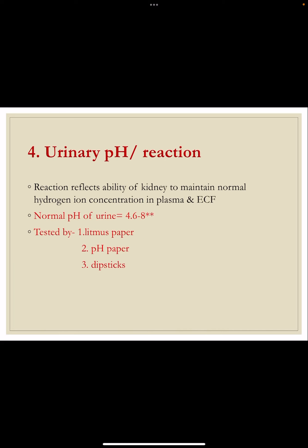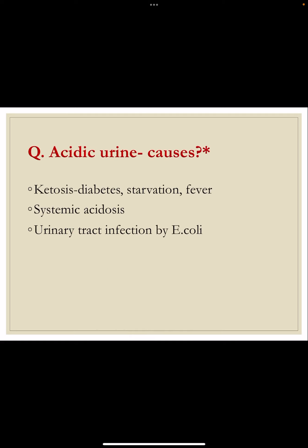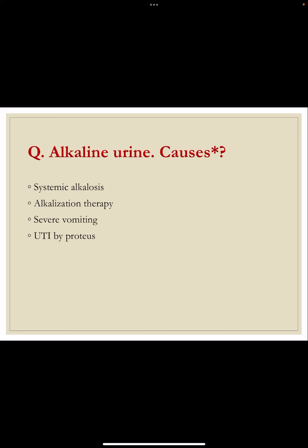Regarding urinary pH: the normal pH of urine is 4.6 to 8, tested by litmus paper, pH paper, or dipsticks. Acidic urine can be due to diabetic ketoacidosis, ketosis due to starvation or fever, systemic acidosis, and UTI specially caused by E. coli. Causes of alkaline urine include: systemic alkalosis, alkalization therapy, severe vomiting, and UTI caused by Proteus species.